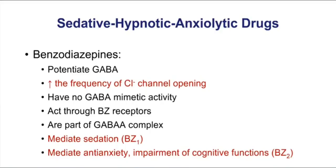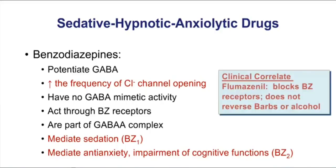There is a note about the drug called Flumazenil. Flumazenil is used as an antidote for benzodiazepines because it can quickly reverse the action of benzos. This drug blocks both BZ1 and BZ2 receptors. But importantly, Flumazenil is not an antidote for barbiturates or alcohol. The reason is barbiturates have a separate binding site — they don't bind to BZ1 or BZ2, nor does alcohol. Therefore, Flumazenil cannot serve as an antidote for those drugs.